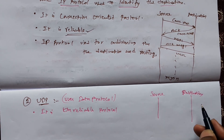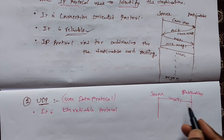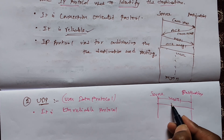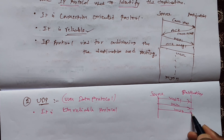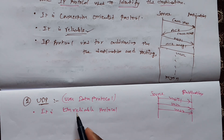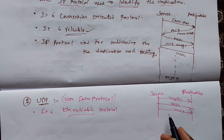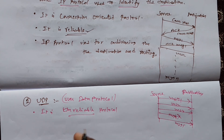In UDP, there is no need to establish a connection initially. It will send message one, then without waiting for acknowledgement, send message two, then message three. Messages may be dropped — for example, message three stops here and message four stops here — and it will still send message five. So it is called an unreliable protocol.